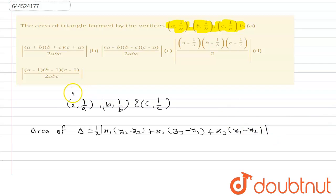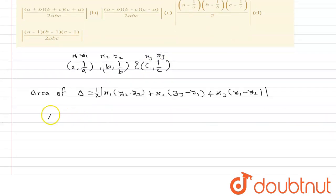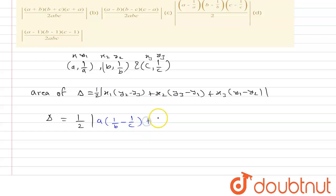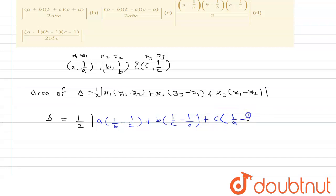Now we have x1, y1, x2, y2, x3, and y3. Putting the values into the formula: area = half × |a(1/b − 1/c) + b(1/c − 1/a) + c(1/a − 1/b)|.